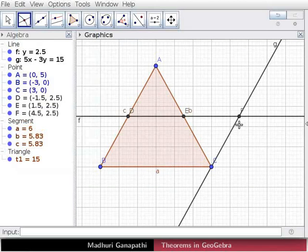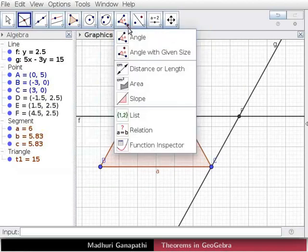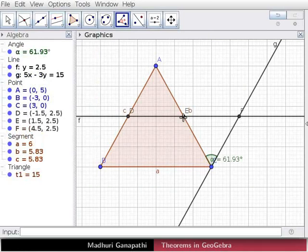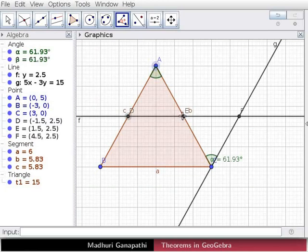Now we need to measure angles F, C, E and D, A, E. Click on the angle tool and click on the points F, C, E and D, A, E. Notice that the angles are equal since they are alternate interior angles.